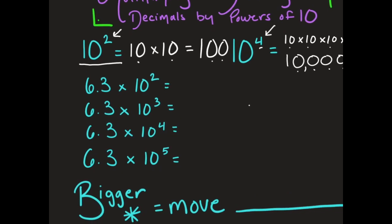Now we're taking a number that has a decimal in it and multiplying it by a power of 10. Here I have 6 and 3 tenths. When I multiply it by 10 squared — that's really multiplying by 100 — I take my decimal point and move it once, then twice. So my answer is 630.